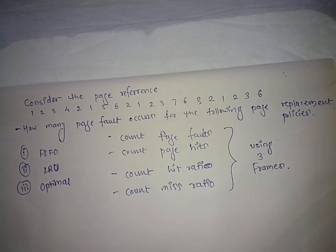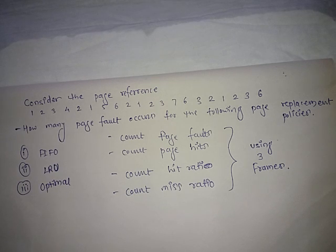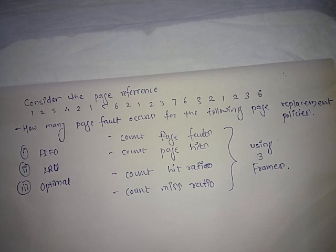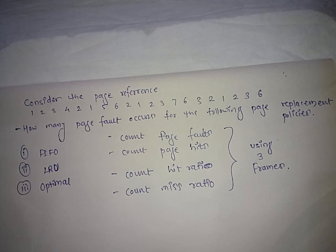The main memory has a certain number of partitions. When pages or segments stored in secondary storage come to primary memory and there are no pages available, you have to replace a particular page from memory. For that replacement there are three algorithms: First In First Out, Least Recently Used, and Optimal Page Replacement. In this first tutorial we are going to solve the problem about the First In First Out algorithm.